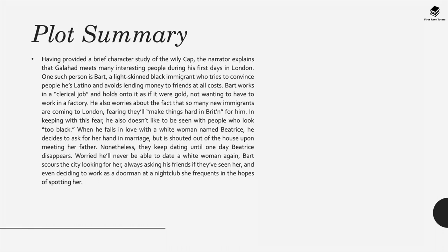Having provided a brief character study of the wily Cap, the narrator explains that Galahad meets many interesting people during his first days in London. One such person is Bart, a light-skinned black immigrant who tries to convince people he's Latino and avoids lending money to friends at all costs. Bart works in a clerical job and holds onto it as if it were gold, not wanting to work in a factory. He worries that so many new immigrants coming to London will make things hard for him in Britain, and he also doesn't like to be seen with people who look too black. When he falls in love with a white woman named Beatrice and tries to propose, he's shouted out of the house by her father. Nevertheless, they keep dating until one day Beatrice disappears, and Bart scours the city looking for her, even deciding to work as a doorman at a nightclub she frequents in the hope of spotting her.